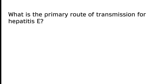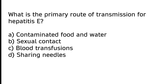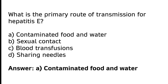What is the primary route of transmission for hepatitis E? A) Contaminated food and water, B) Sexual contact, C) Blood transfusions, D) Sharing needles. The correct answer is option A — the primary route of transmission for hepatitis E is contaminated food and water.